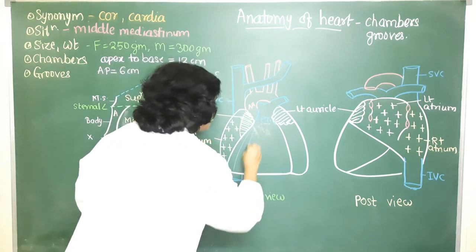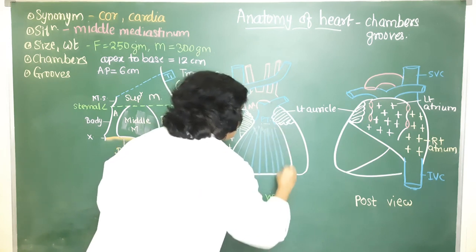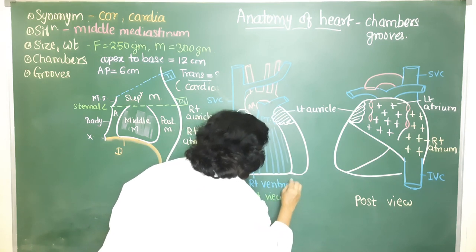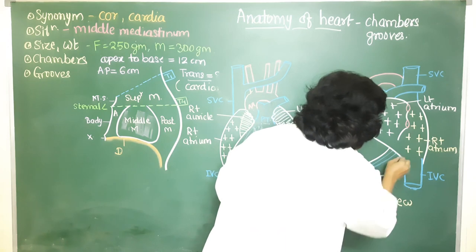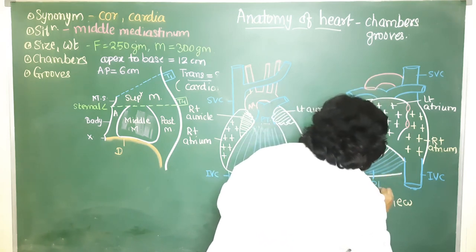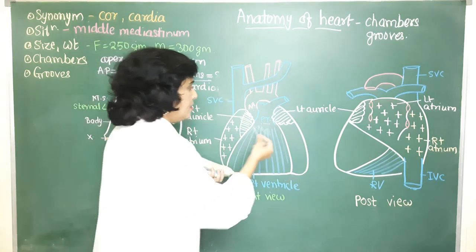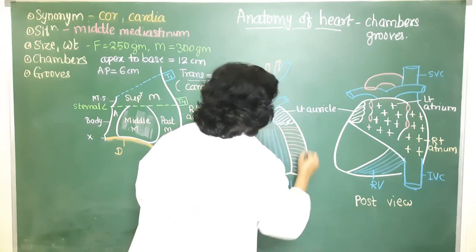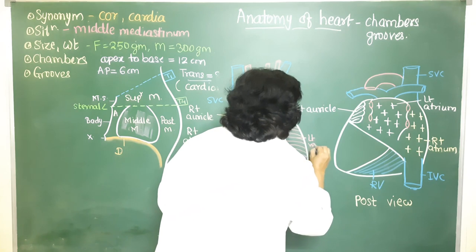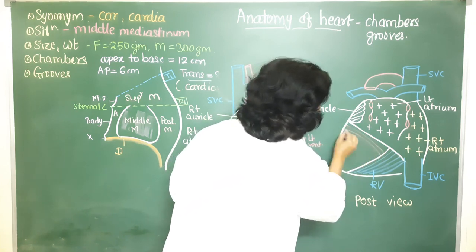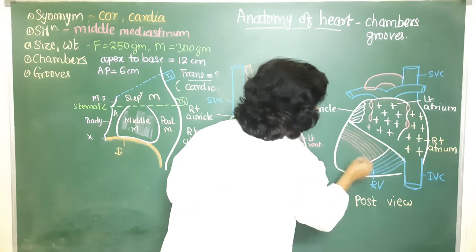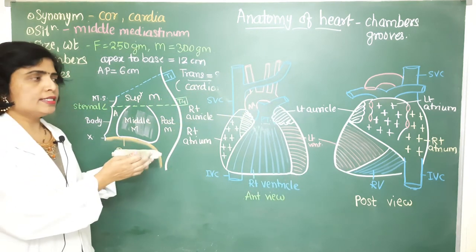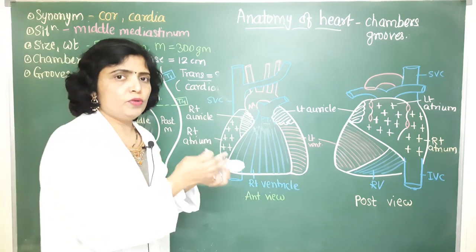From the anterior view you can see the right ventricle, with part of it also extending onto the inferior surface. The remaining area visible is the left ventricle. On the inferior surface, the major part is formed by the left ventricle. These are the four chambers of the heart: two atria and two ventricles.